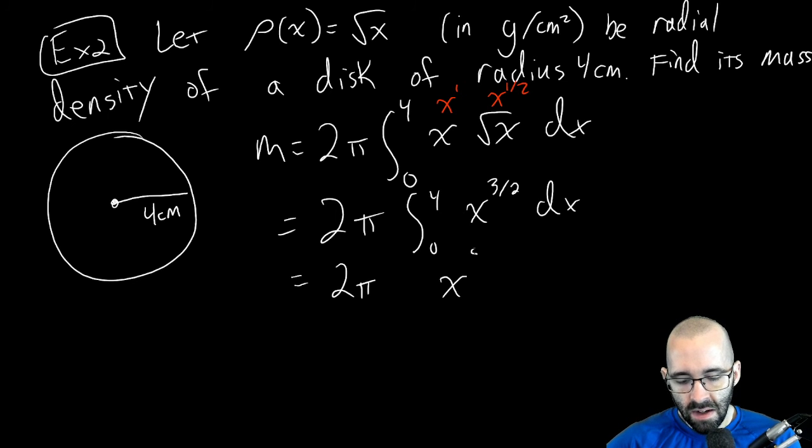This becomes x to the three halves. We get 2π. Anti-derivative: we add an exponent and divide by that exponent. Let's keep that constant in front - that's 4π/5 that will stick out in front.